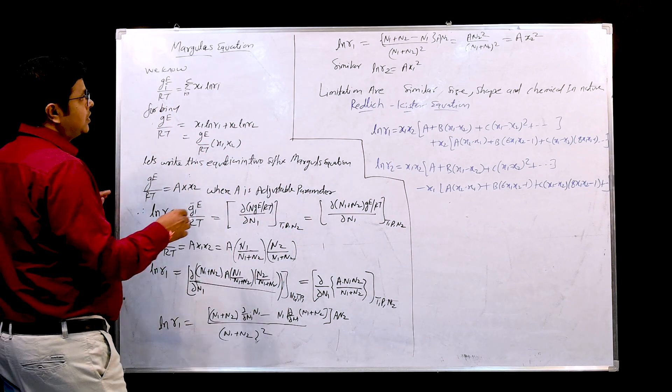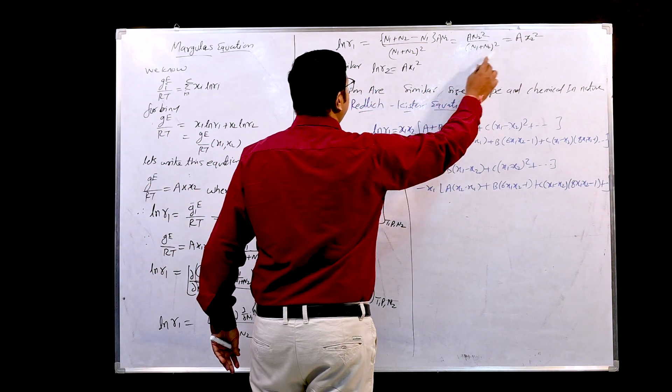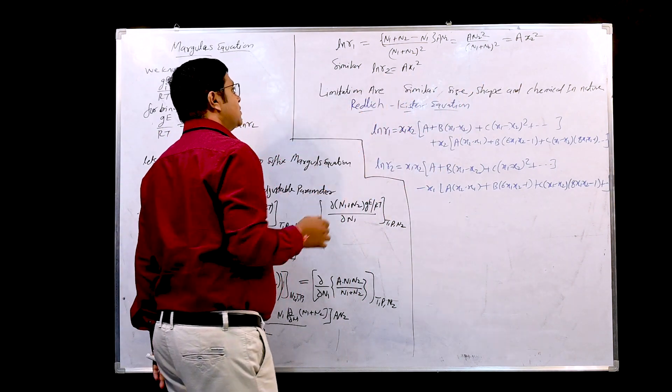Initially it started with the Margules scientist name and he has given one equation: ln gamma 1 equals A x2 square and ln gamma 2 equals A x1 square.